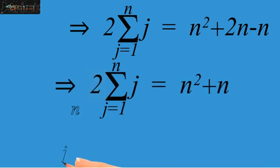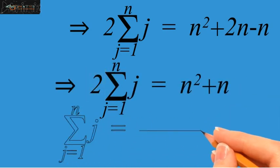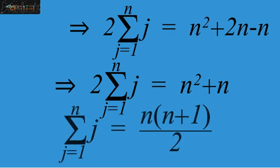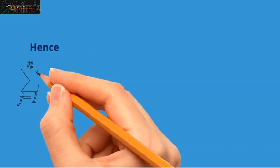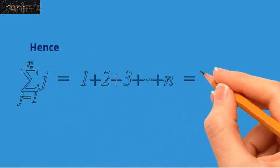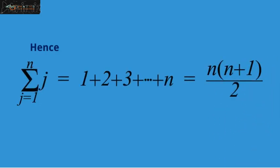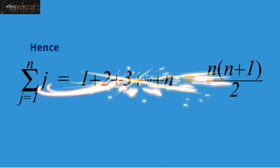So, we get summation j equals 1 up to n, j is equal to n times n plus 1 divided by 2. Hence, we have proved that the sum of the first n natural numbers is equal to n times n plus 1 divided by 2.